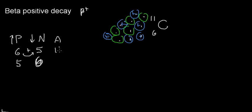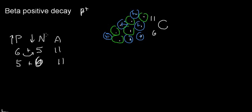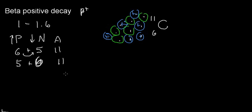Six plus five equals 11, and five plus six is also 11. This happens because it's more stable with a ratio closer to 1:1.6 neutrons to protons. And this event actually happens in carbon-11.